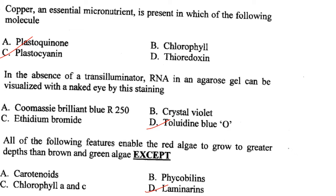In the absence of a transilluminator, RNA in an agarose gel can be visualized with the naked eye by staining with toluidine blue O. Answer is option D.